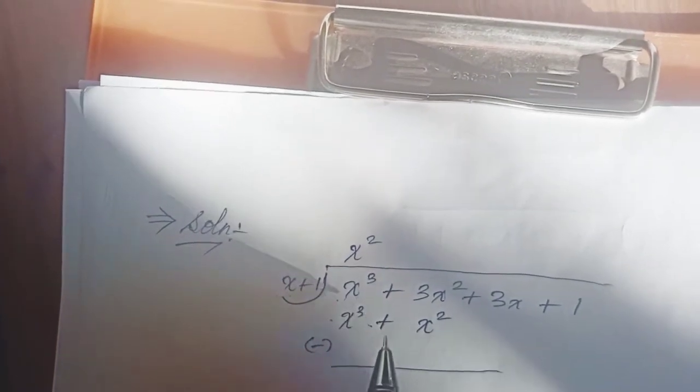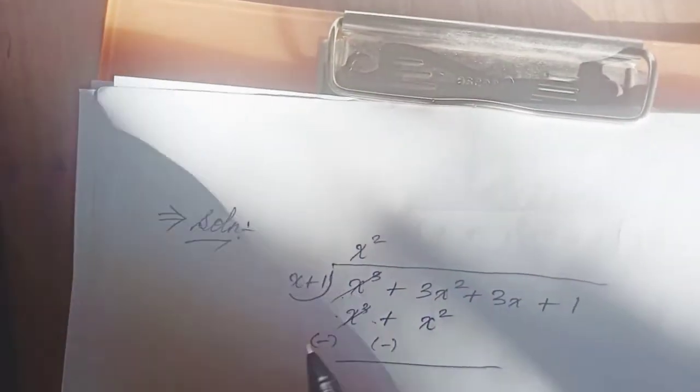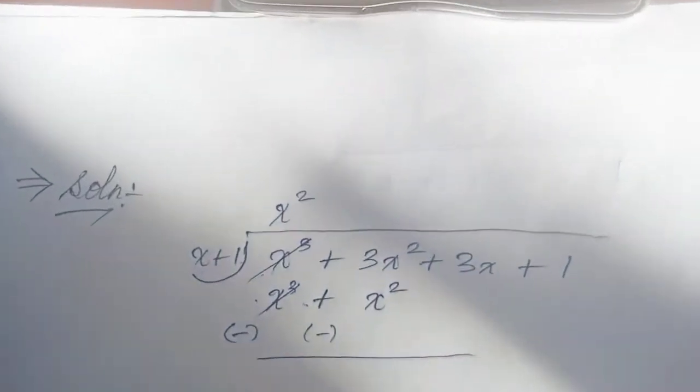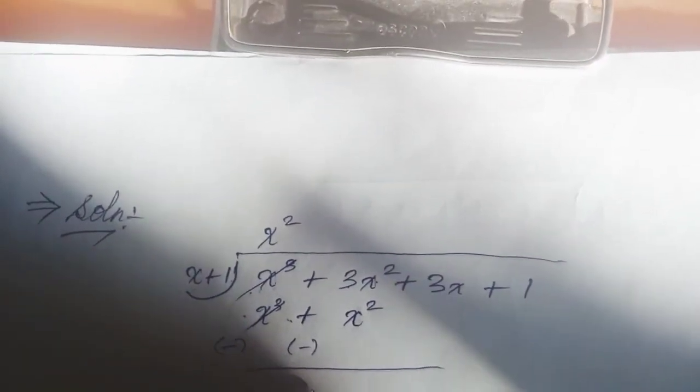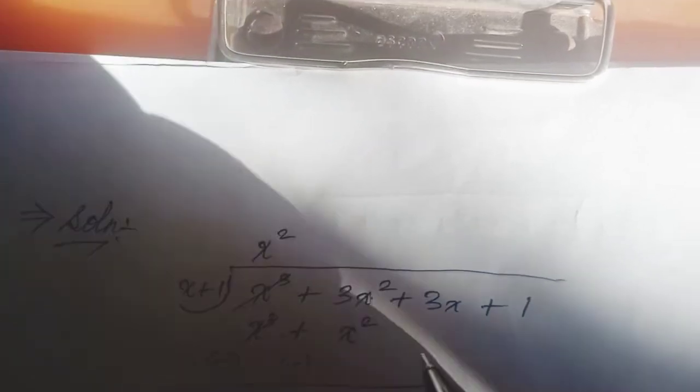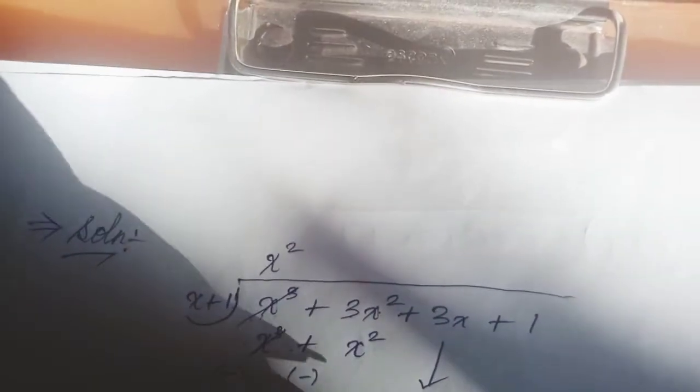This cancels. So we have three x squared minus x squared which equals two x squared.